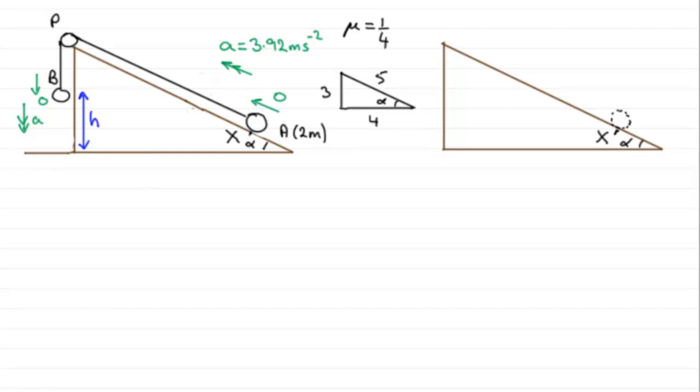Now in this last part of the question we're told that as B moves down and then hits the ground, the particle A moves up the plane towards P and then comes to rest at a point Y. We've got to find the distance XY in terms of h.